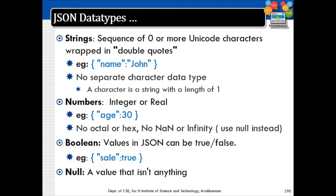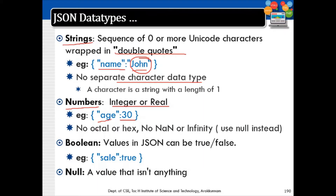For the string data type, it contains a string as its value — for example, name: "John". Strings are wrapped in double quotes. There is no separate character data type in JSON. Numbers can be integer, floating-point, or real values. No octal or hex values are permitted, and no NaN or infinity values are allowed.